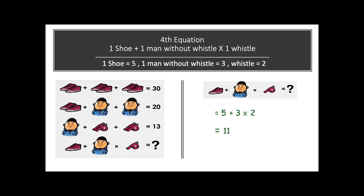Now jumping on to the fourth and final equation. We have to look carefully at this equation because our hidden elements are maximum in this final equation. We have one single shoe. We apply the values, and the value which comes after multiplication, we have to add that value with 5. Solved.